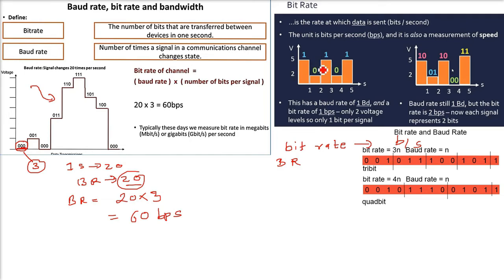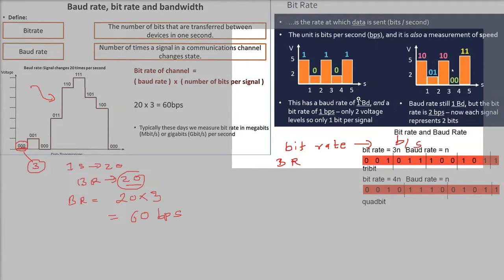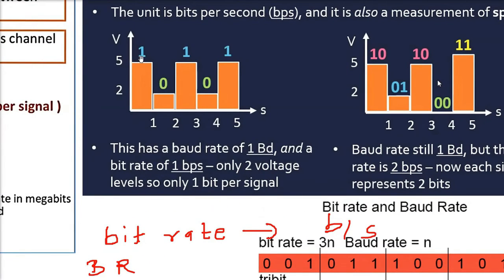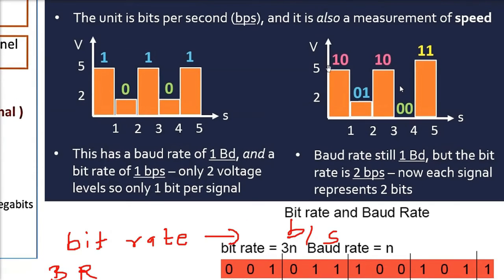Here you see two more figures. So this has a baud rate of one baud and a baud rate of one bit per second. Only one bit is going, one bit per second. Here you have two bit per second, means you have in a one symbol, two bits. So baud rate still is one baud, but the bitrate is 2 bps.